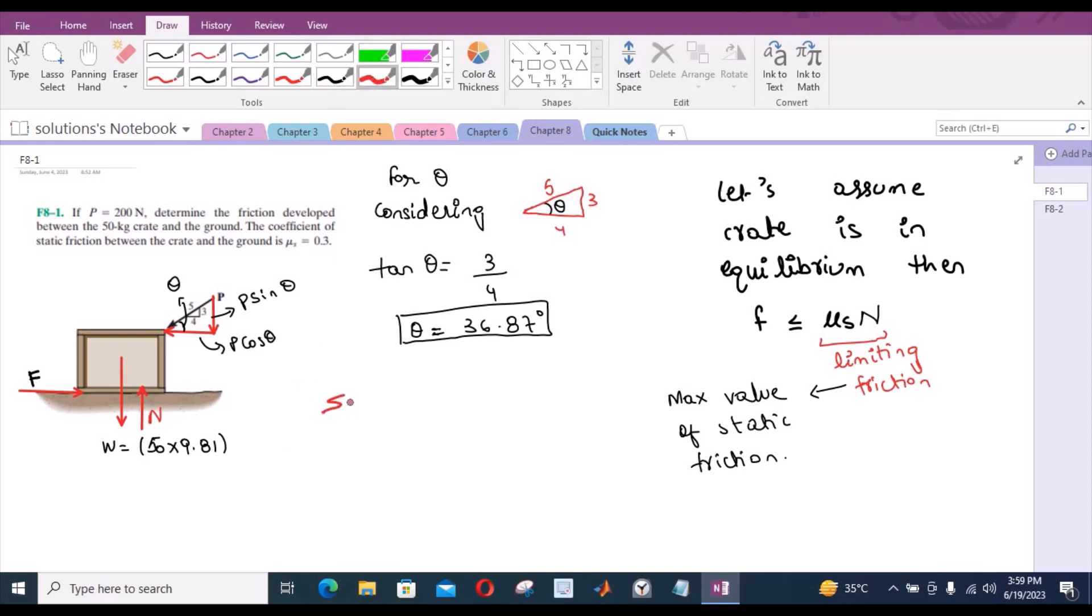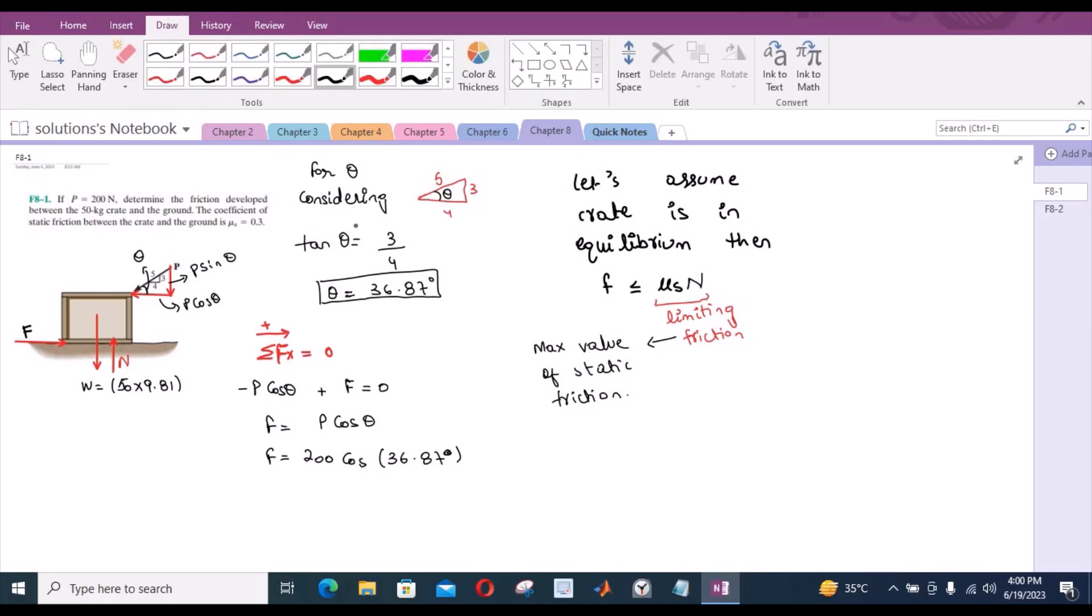We have sum of forces in the x direction equals 0, since the crate is in equilibrium. If I consider right as positive, then I have negative P cos theta plus F equals 0. So F equals P cos theta. From here, F equals 200 cos 36.87 degrees. The frictional force becomes 160 N.